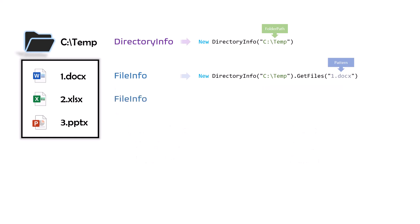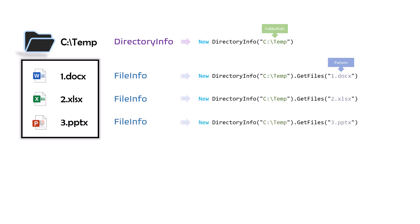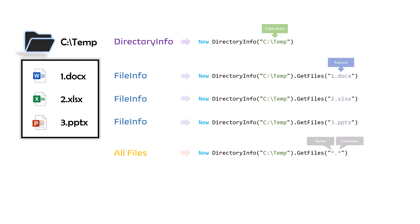Now, how can we get all files from a directory? We can do that using the wildcard statement with star-dot-star. The first star is for the name — meaning I want to get any file no matter what the name is. The second star is for the extension, meaning I want to get any file no matter which extension it has. So these stars are wildcards for the name and the extension.